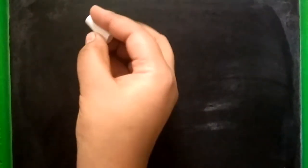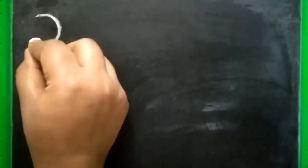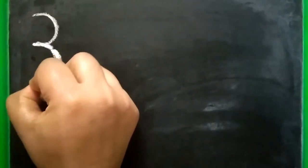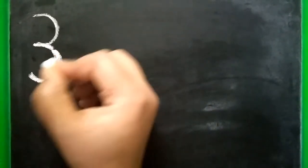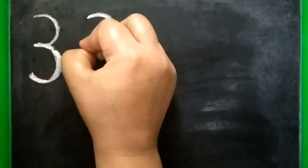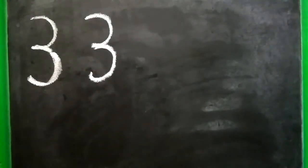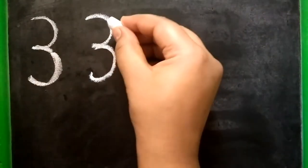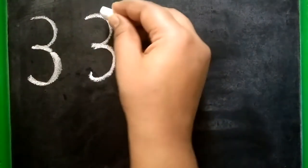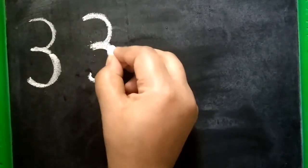Look here. I will write number 3. A curve forward and again a curve forward is number 3. Okay, once more curve forward, one more curve forward makes number 3. Alright. One at the top and one at the bottom. Curve forward, curve forward is number 3.